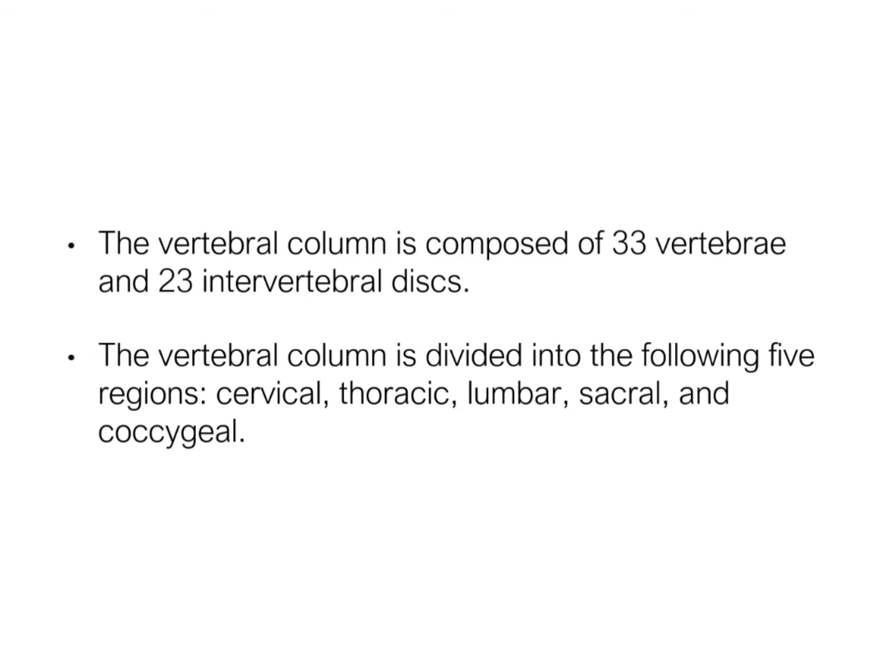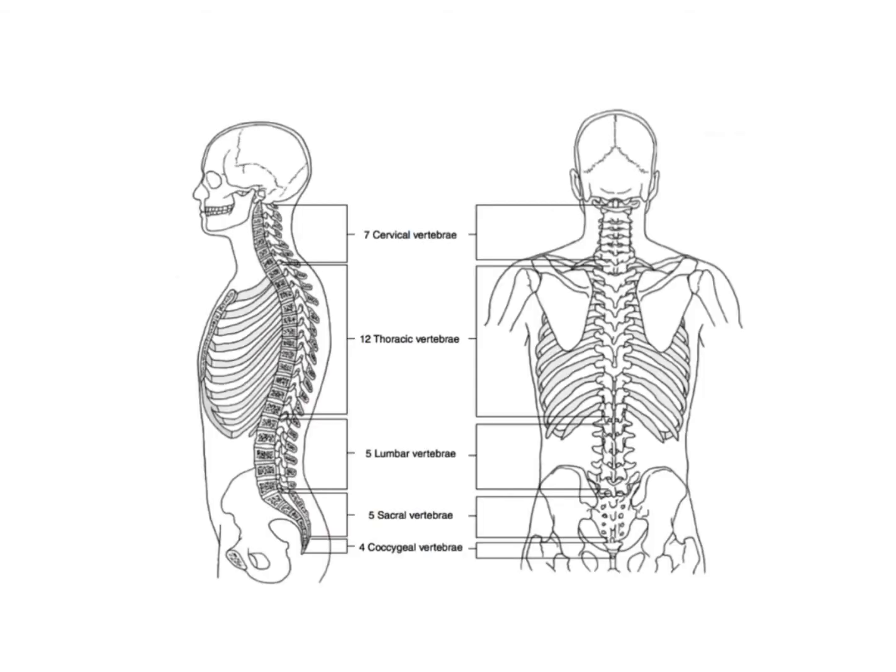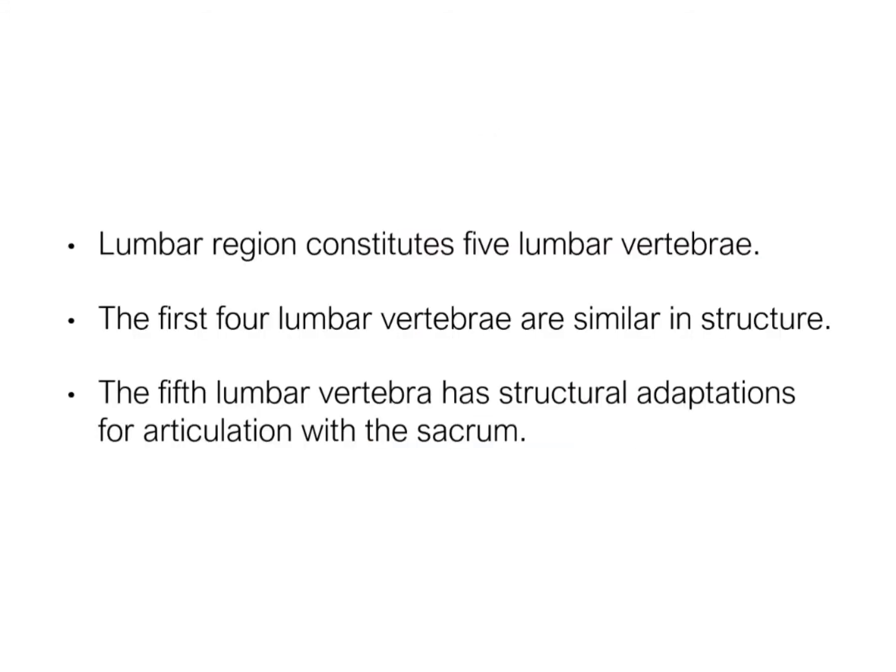The vertebral column is composed of 33 vertebrae and 23 intervertebral discs, divided into 5 distinct regions: cervical, thoracic, lumbar, sacral, and coccygeal. The lumbar region constitutes 5 lumbar vertebrae. The first 4 lumbar vertebrae are similar in structure, and the 5th vertebra has structural adaptations for its articulation with the sacrum.